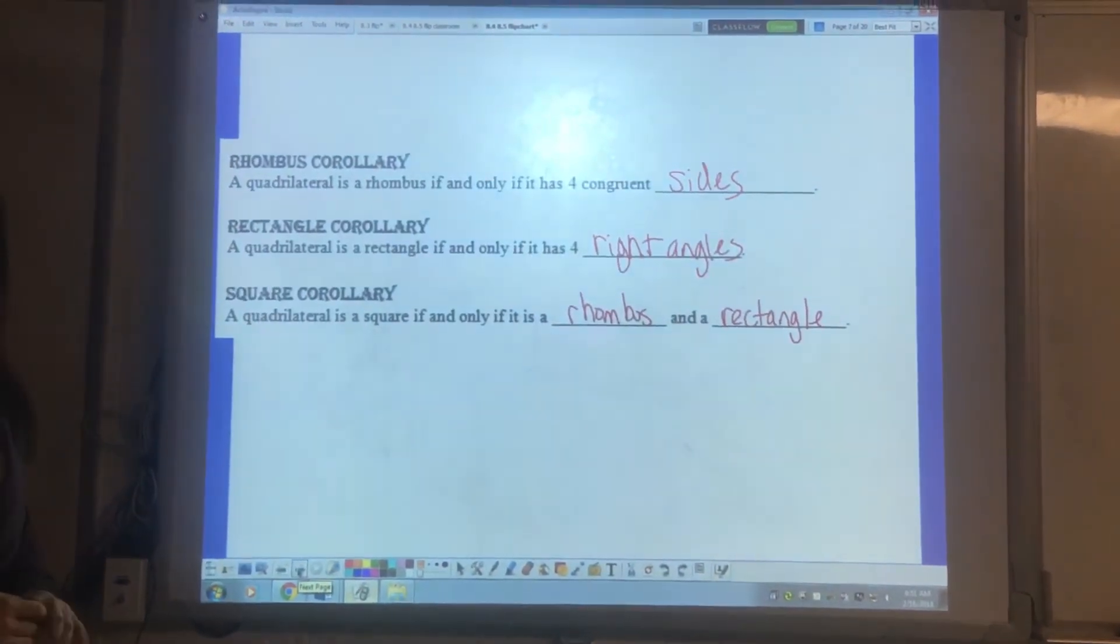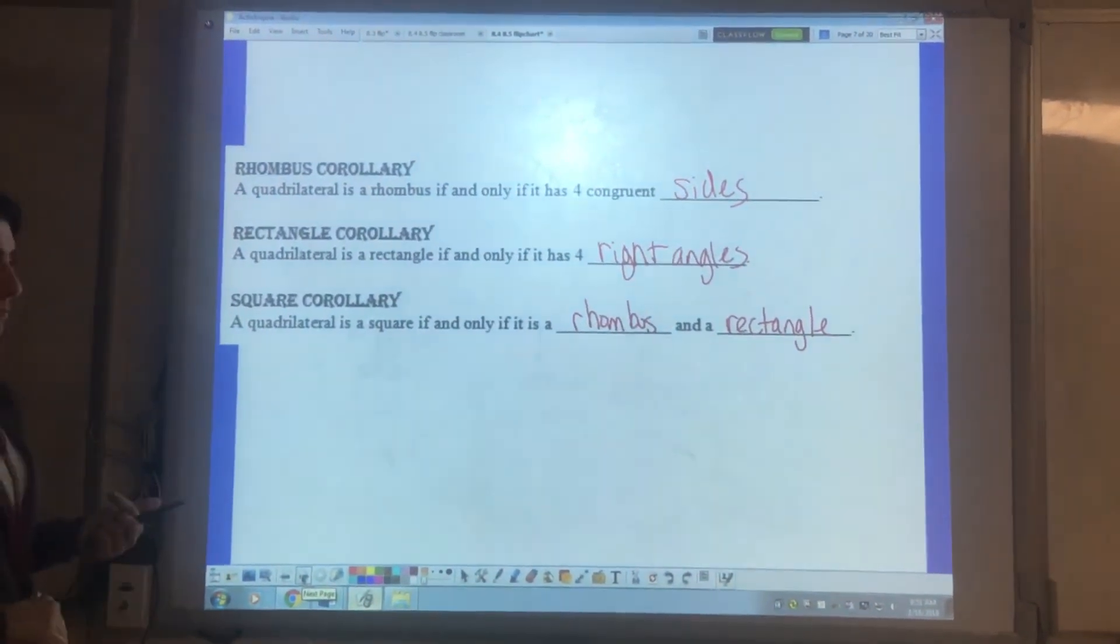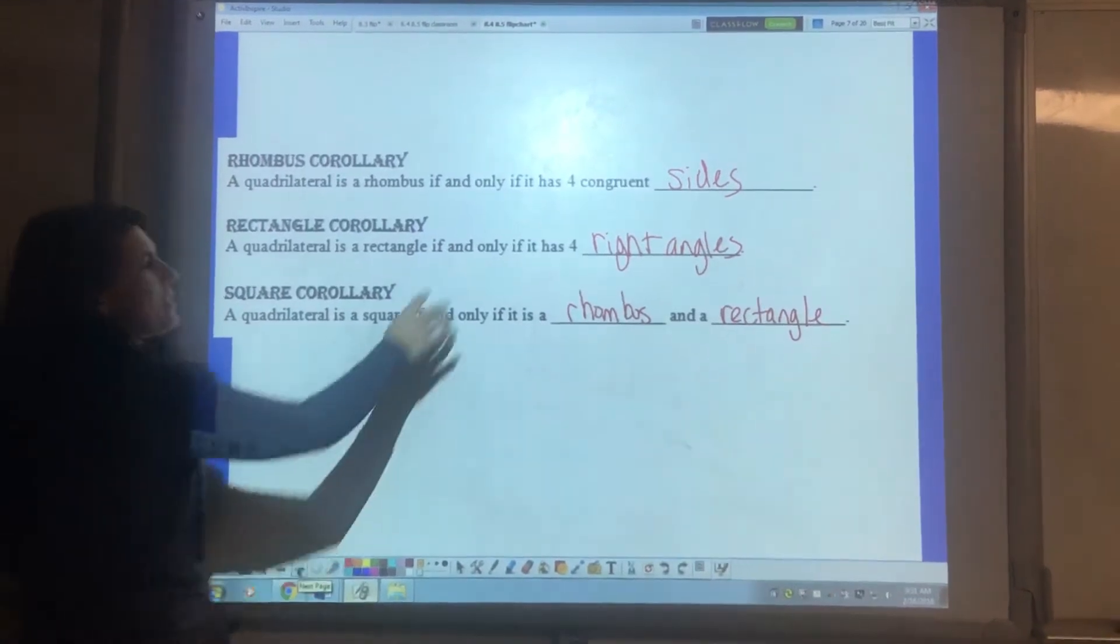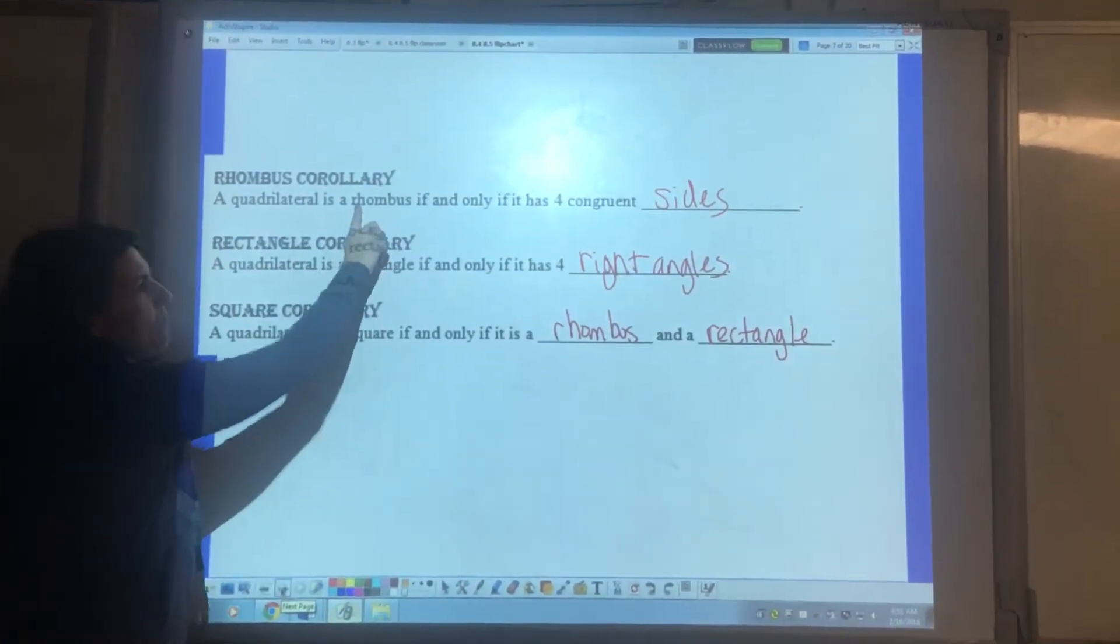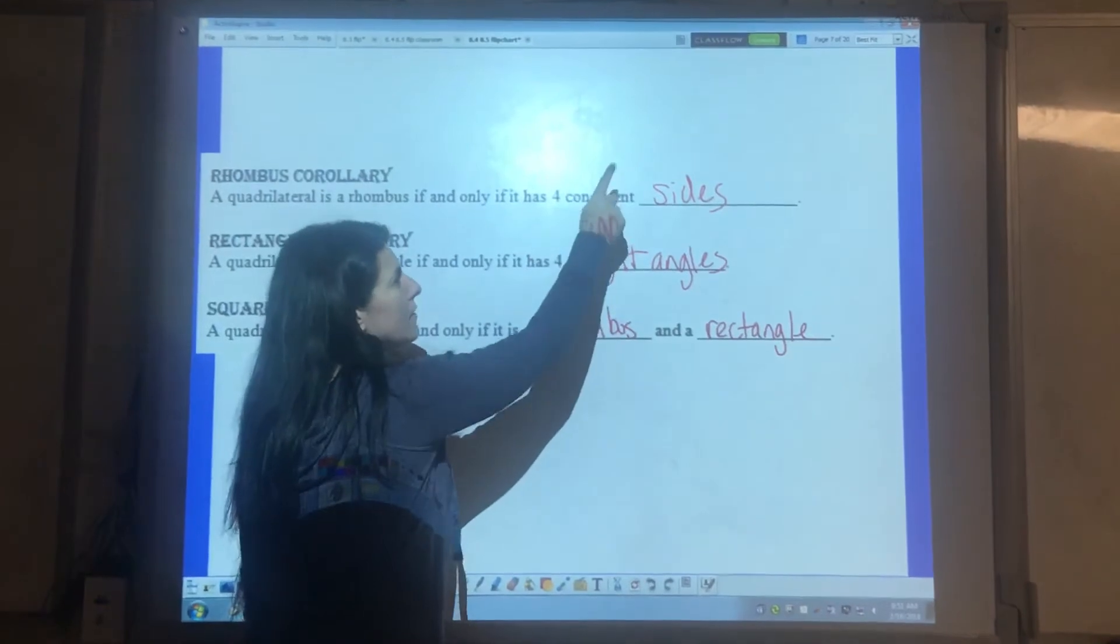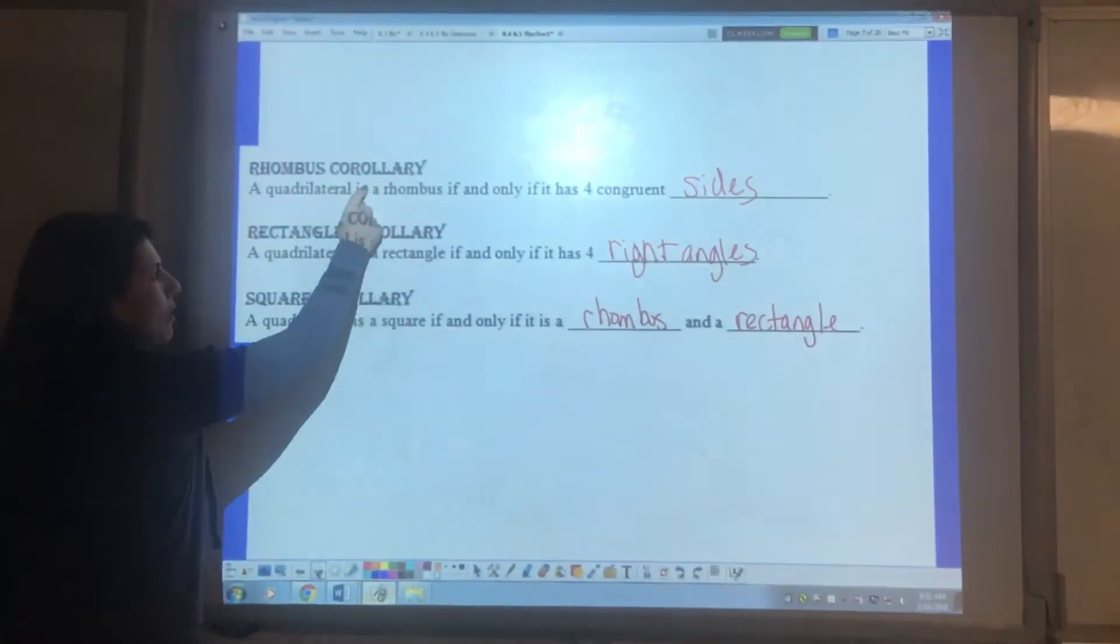These are corollaries. Remember they're similar to theorems. Notice the if and only if. That means it works both ways. So it's a rhombus if it has four congruent sides. If it has four congruent sides then it is a rhombus.